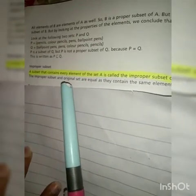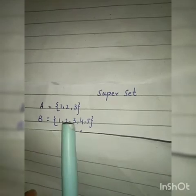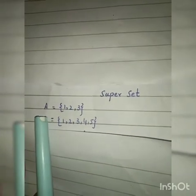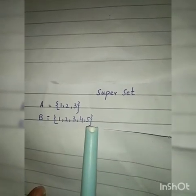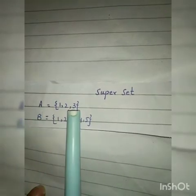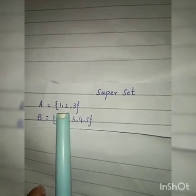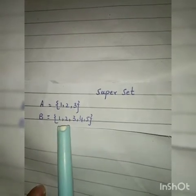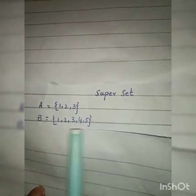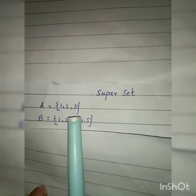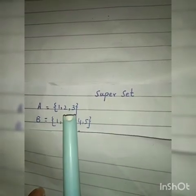Next ہم کریں گے super set۔ Super set کیا ہوتا ہے؟ اس کے لئے دیکھیں ہمارے پاس دو sets لکھے ہوئے ہیں - Set A جس کے elements ہیں one, two, three اور Set B جس کے elements ہیں one, two, three, four, five۔ Set A کے تمام elements Set B میں موجود ہیں لیکن Set B کے تمام elements A میں نہیں ہیں۔ تو ہم کہیں گے کہ Set B، Set A کا super set ہے۔